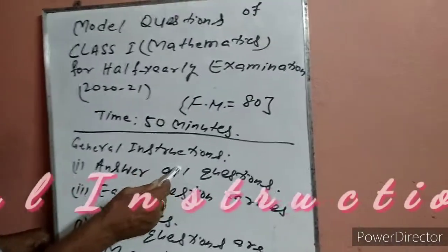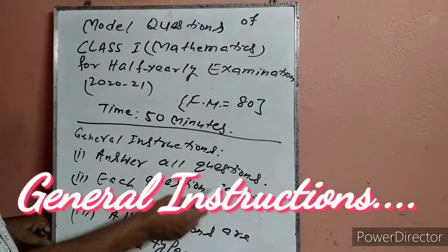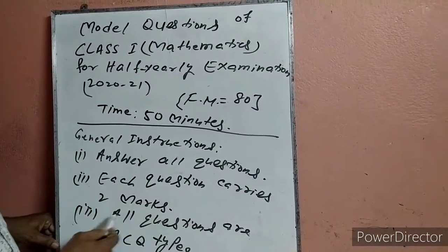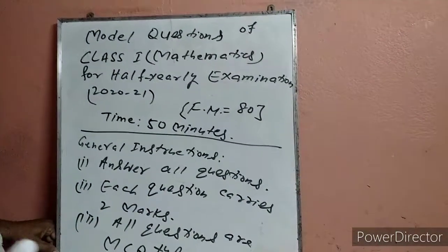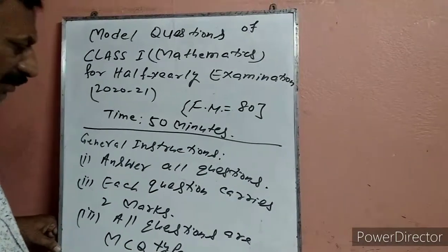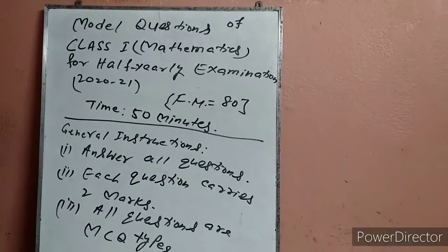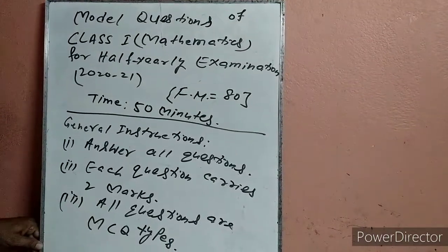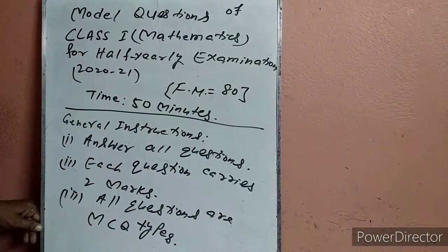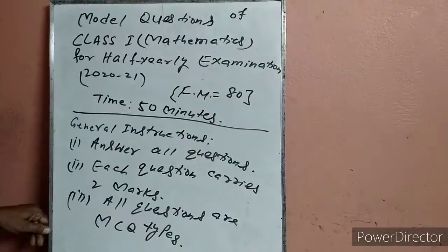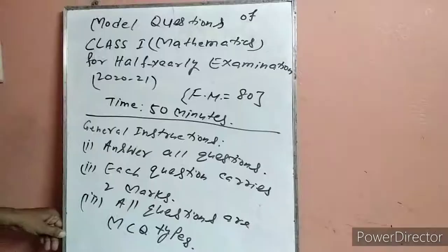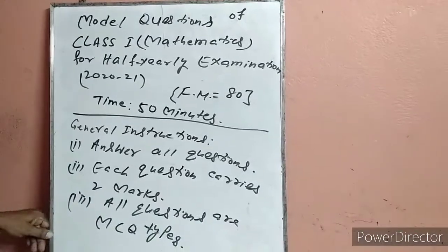General instructions: answer all questions, सभी questions का जवाब दें. Each question carries two marks, हर question दो number का होगा. All questions are MCQ type, मने multiple choice question. एक question का 4-4 options होंगे, उसमें एक सही है, उसी को टिक लगाना, बाकी को छोड़ देना है. Total number of questions 40 होंगे, children.